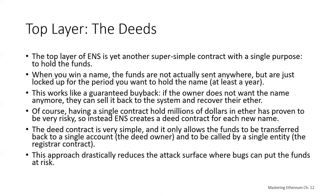The top layer of the Ethereum Naming System deals with deeds — another simple contract whose purpose is to hold funds. When you win a name, the funds are not sent anywhere but are locked up for at least a year. This works like a guaranteed buyback: if the owner doesn't want the name anymore, they can sell it back to the system and recover their ETH. To avoid the risk of a single contract holding millions of dollars, ENS creates a deed contract — an NFT — for each new name. The deed contract, about 50 lines of code, only allows funds to be transferred back to the owner and to be called by the registrar contract, drastically reducing the attack surface.